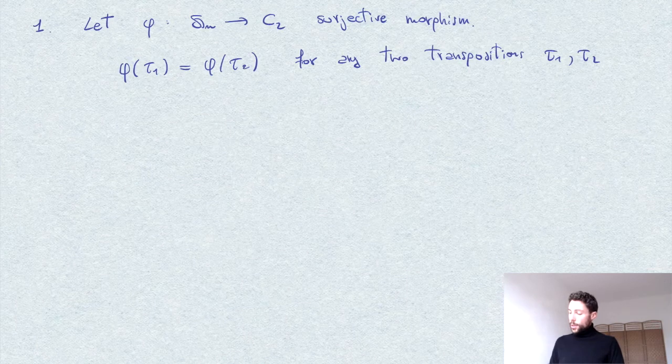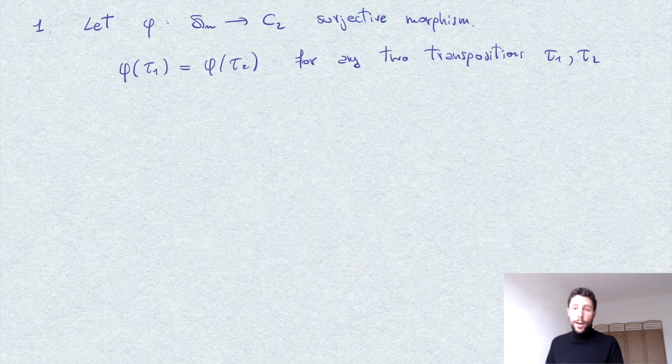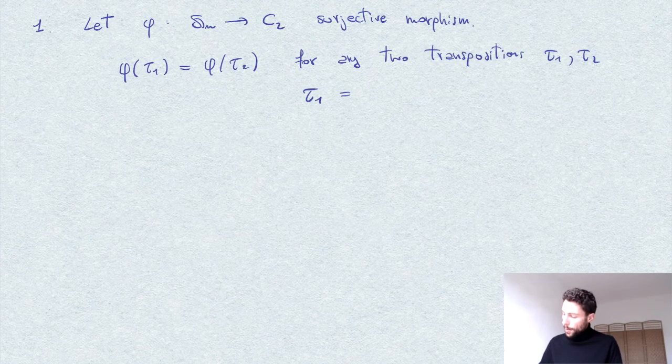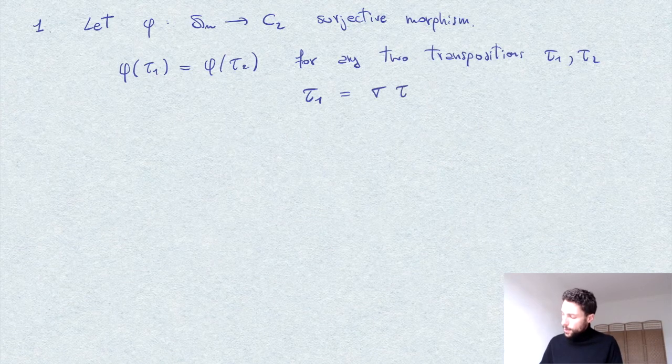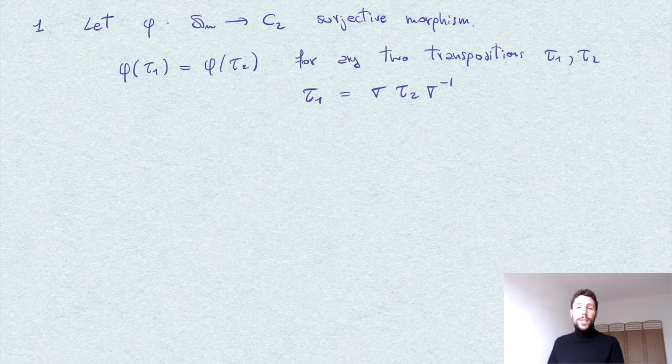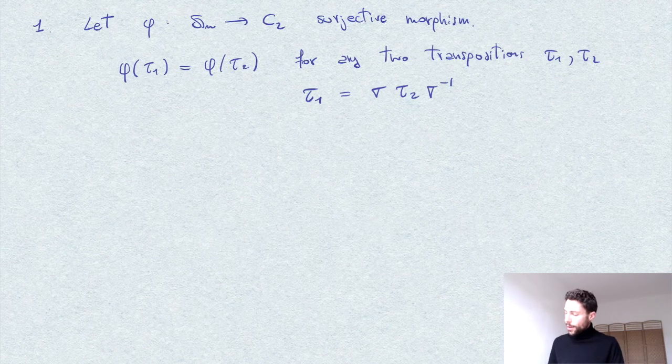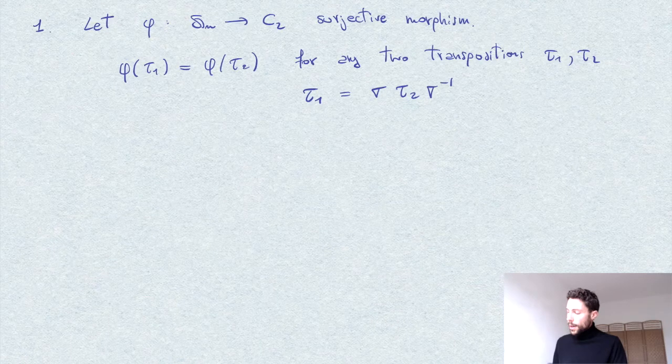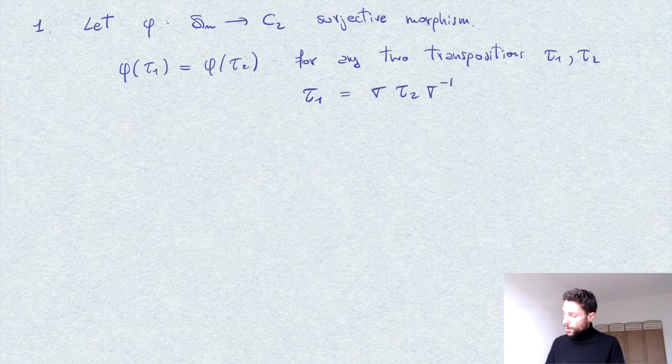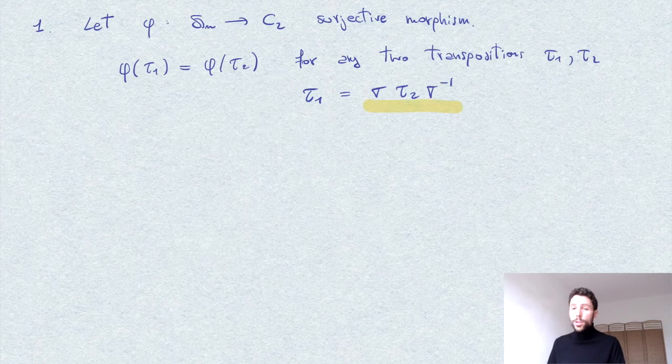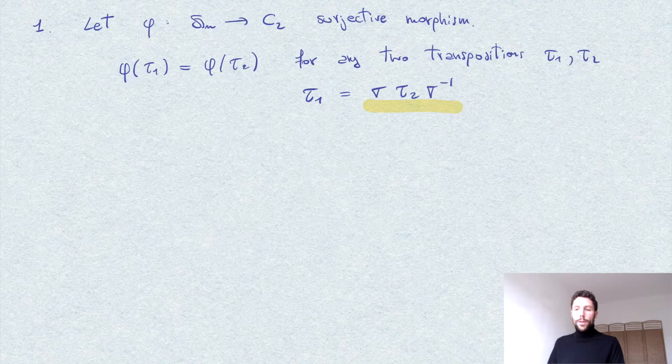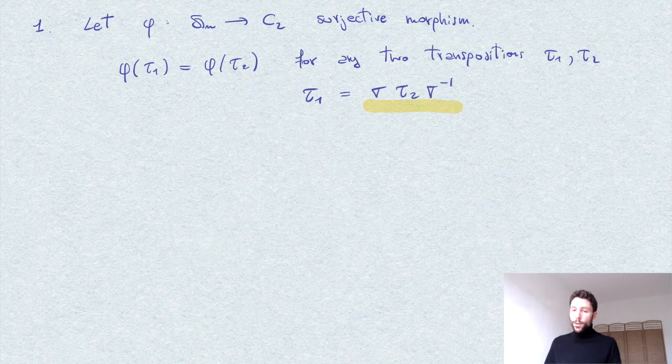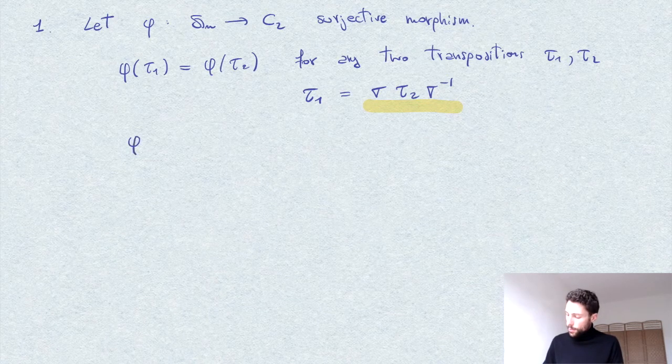And the reason is the fact that all transpositions are conjugate. In other words, tau_1 will always be possible to write as sigma tau_2 sigma inverse for some sigma in S_n. And therefore by the fact that phi is a homomorphism, we see that phi of tau_1 has to be equal to phi of the right hand side here, which is obviously equal to phi of tau_2.